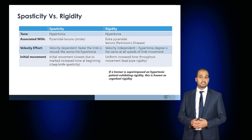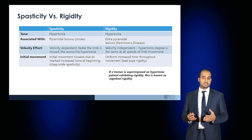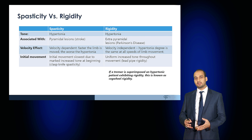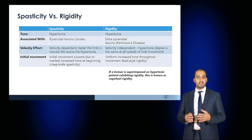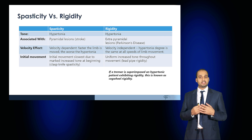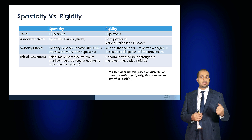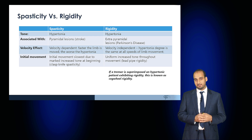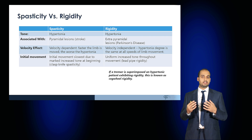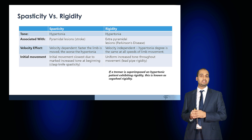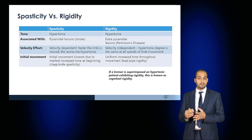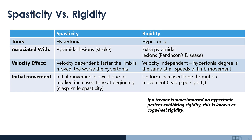Both spasticity and rigidity occur in hypertonic states. Spasticity is typically seen with pyramidal lesions and rigidity with extrapyramidal lesions. There is a velocity effect: with spasticity, the faster the limb is moved, the more marked the increase in hypertonia. Whereas rigidity is velocity independent — irrespective of the speed of movement, the degree of hypertonia remains the same.